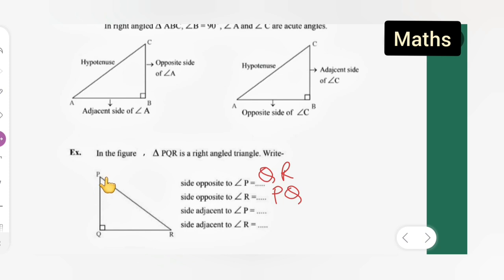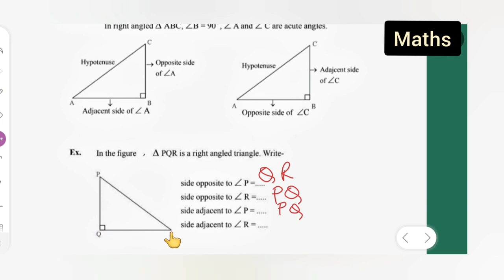The side adjacent to angle P is PQ. The side adjacent to angle R is QR. I hope you have understood this clearly. You need to study this.